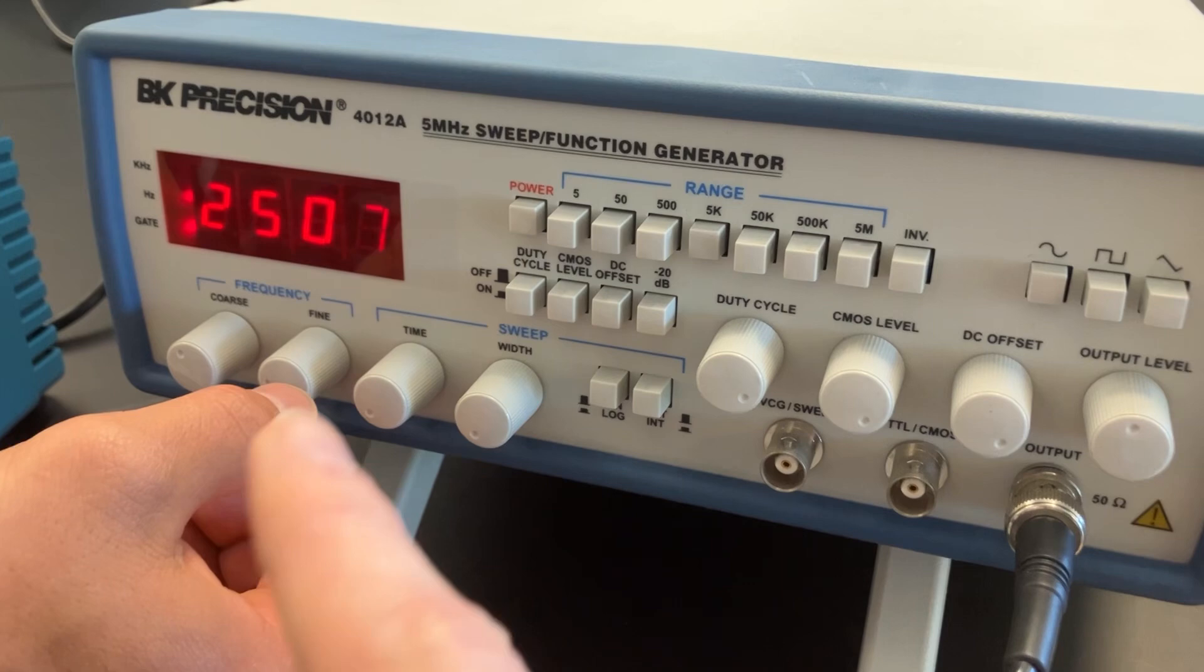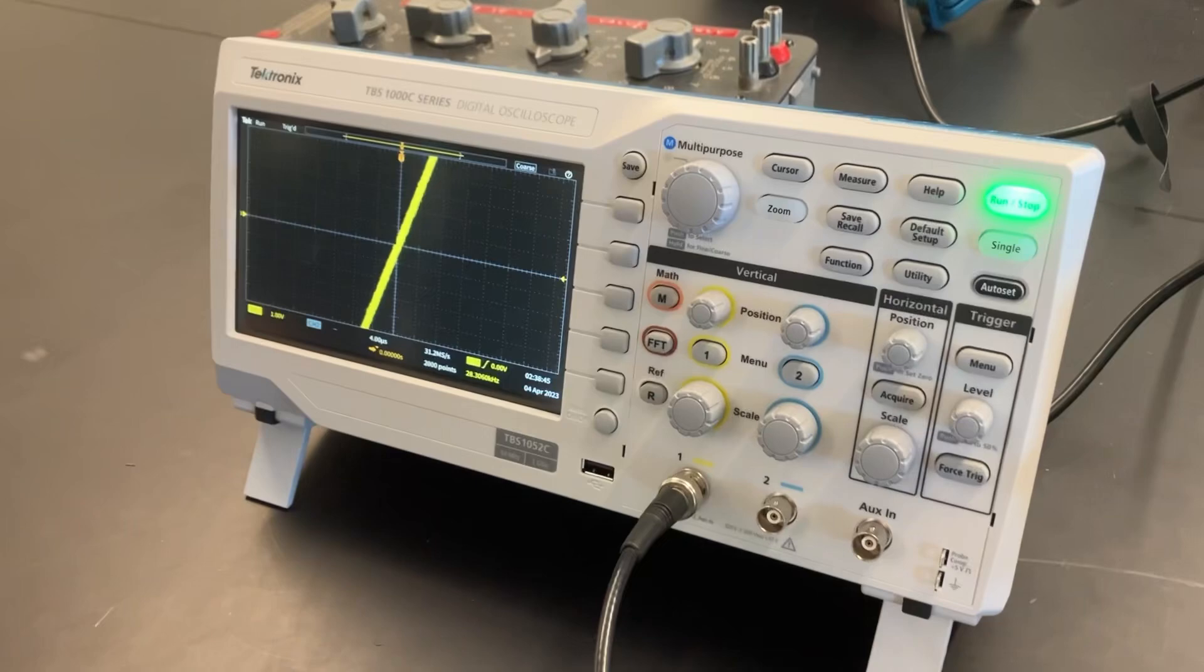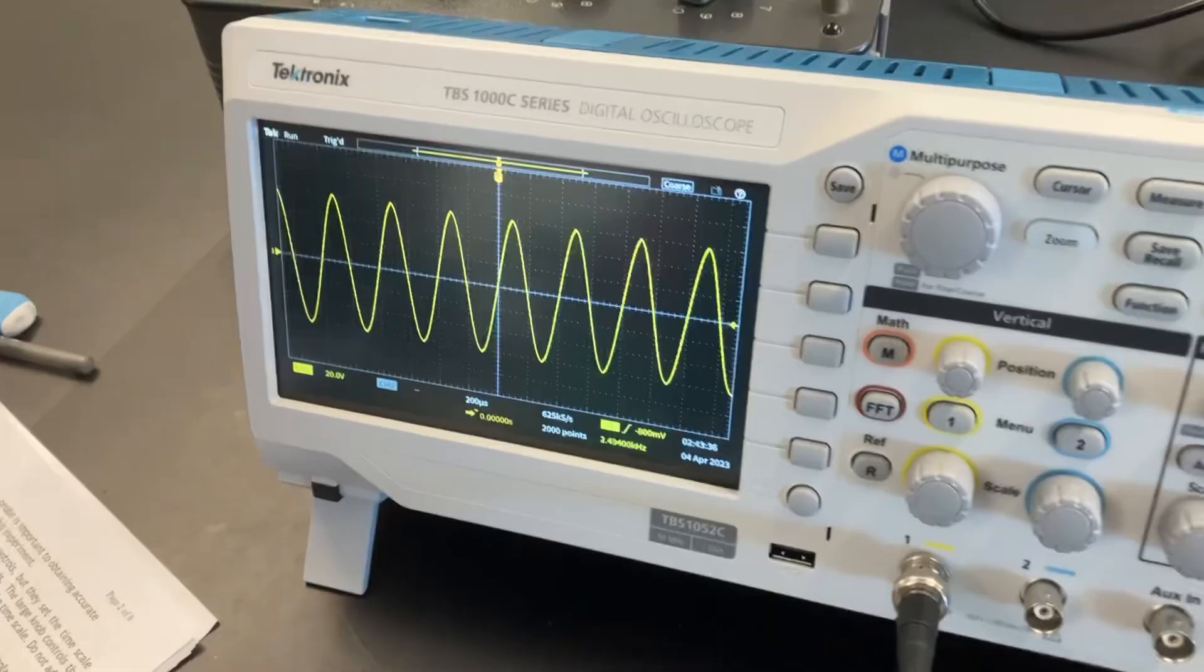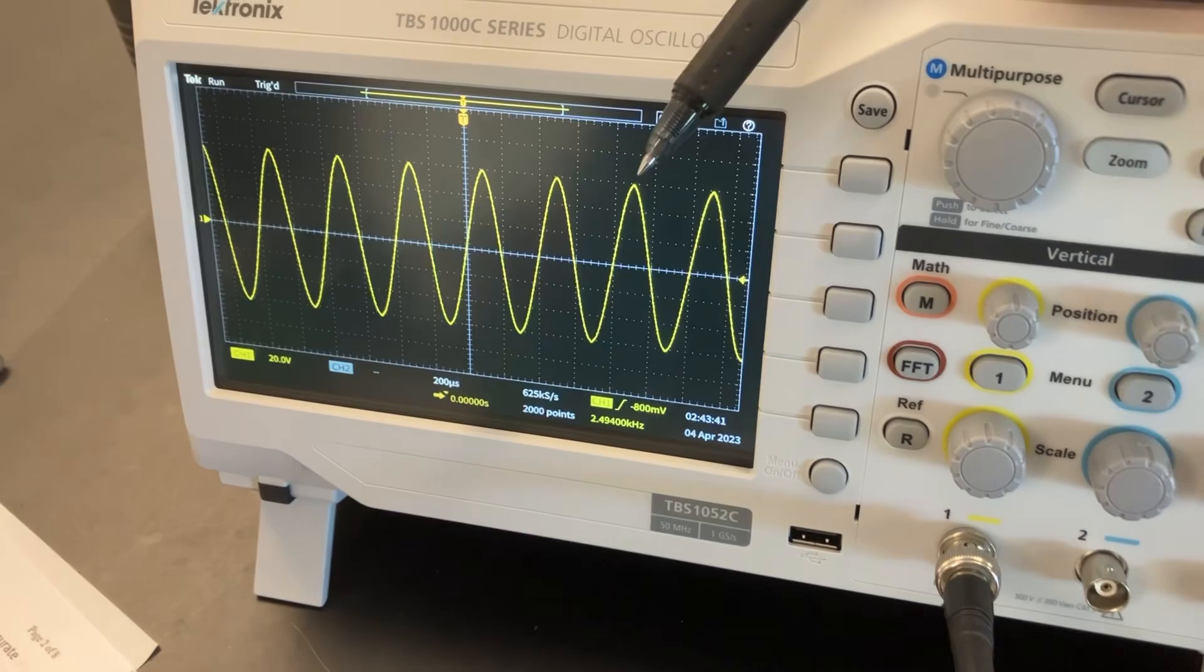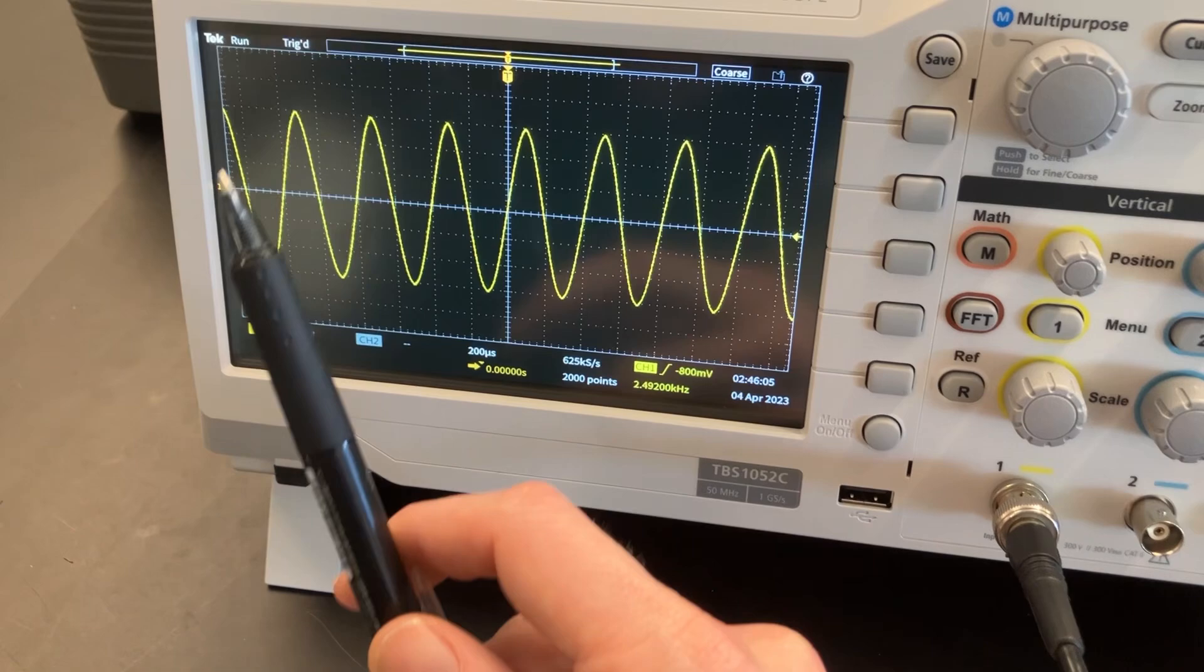Now we're going to click the autoset button on the oscilloscope. We're going to count one, two, three, four, five, six, seven complete cycles. This 20 volts indicator means one of these squares is 20 volts, and the 200 microseconds indicates that one of these divisions is 200 microseconds.